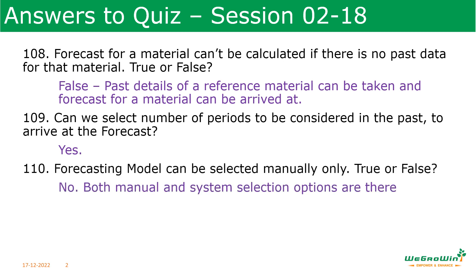Forecasting model can be selected manually only — true or false? No, there is an option to select by the system also. So we can select manually or we can allow the system to select it by itself.